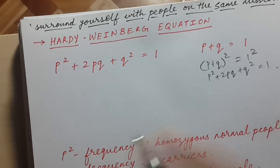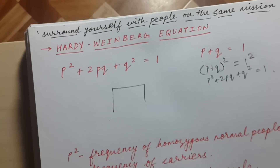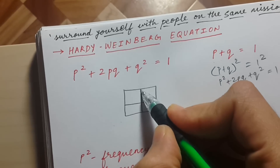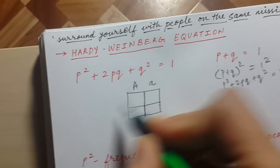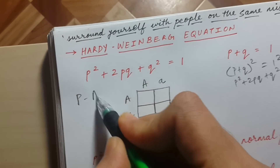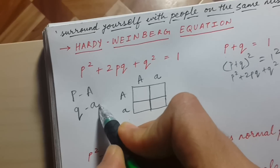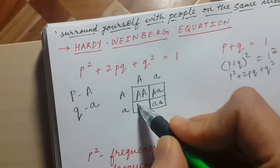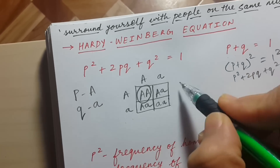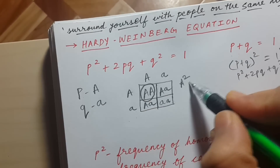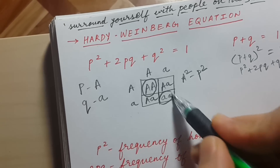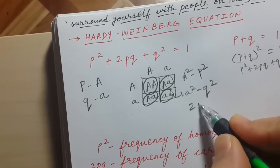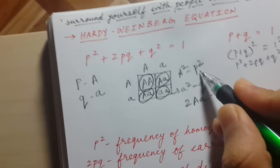Another way to understand is by using a 2×2 table. Let's say the normal gene is capital A and the mutated gene is small a. In this equation, p is the normal gene and q is the abnormal (mutated) gene. Filling in the table: AA can be written as A² or p²; aa can be written as a² or q²; and Aa appearing two times is 2Aa or 2pq. So p², q², and 2pq.